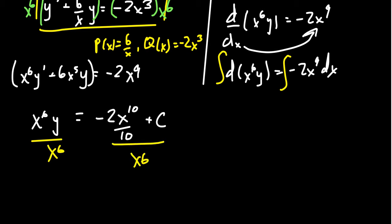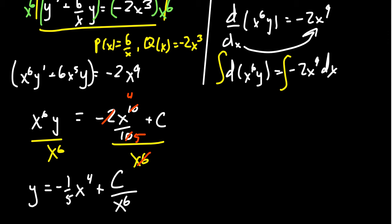Dividing both sides by x to the sixth gives y equals negative one fifth x to the fourth plus C over x to the sixth. We have to be very cautious here: our plus C can only absorb constants, it cannot absorb variables. Although C is an arbitrary constant, C divided by x to the sixth is no longer an arbitrary constant — it's a function with an unknown coefficient. So this is the solution to our differential equation.